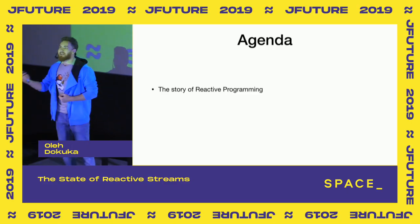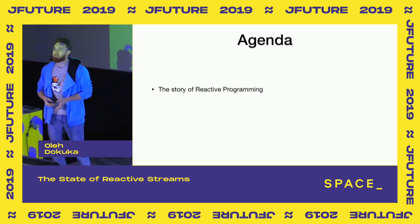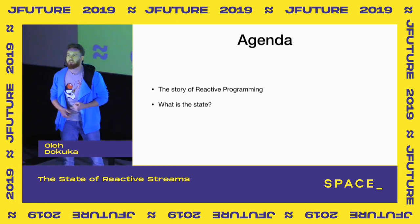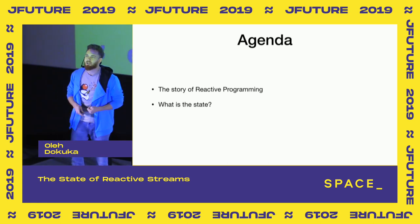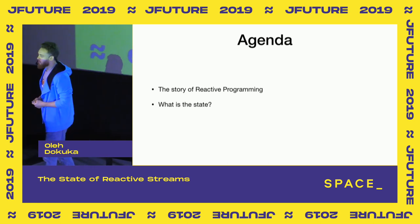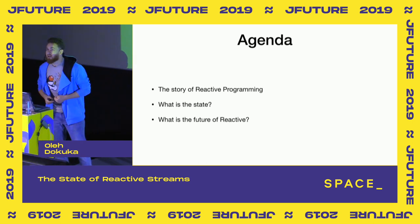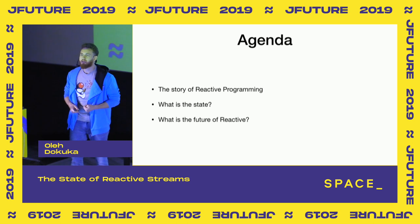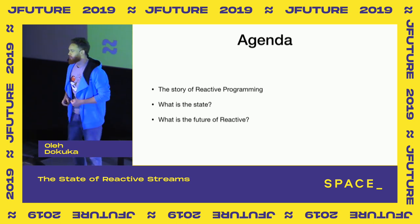Let's talk a little bit about what we are going to cover today. We are going to start with the story of reactive programming, because it's important to understand why we have reactive streams nowadays. Then we are going to look at the current state and what we have today in terms of libraries. And we are going to finalize everything with the question whether it has any future.